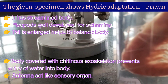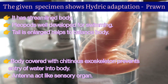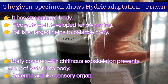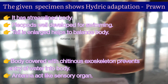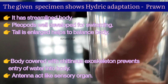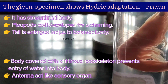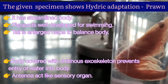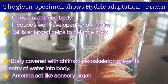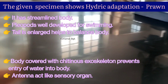The given specimen shows hydric adaptation — the prawn. It also has a streamlined body. Pleopods are well developed for swimming. The tail is enlarged to help balance the body. The body is covered with chitinous exoskeleton, which prevents entry of water into the body. Antennae act as sensory organs. Prawn also has compound eyes. The leg-like structures visible on the specimen are called pleopods, not legs. These characters enable prawn to live inside water.